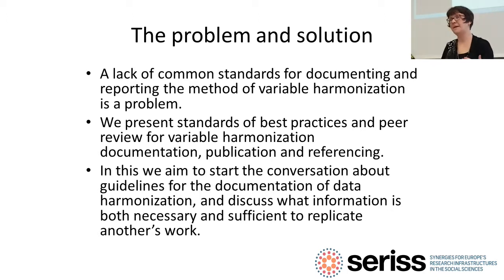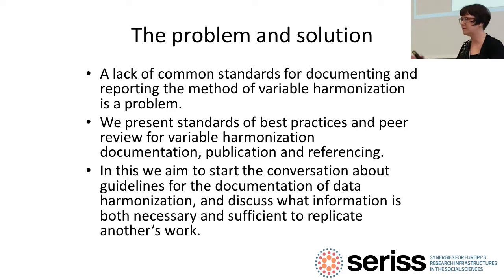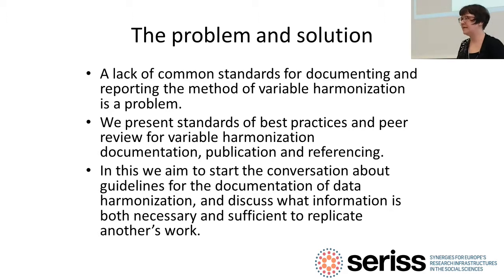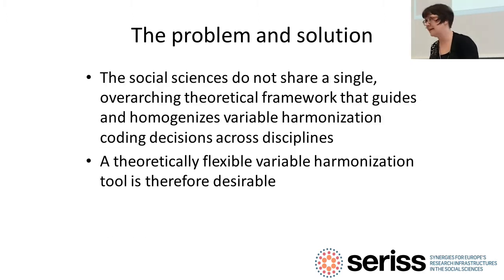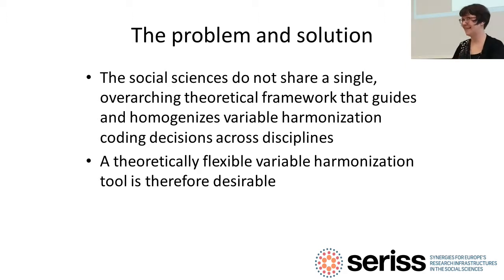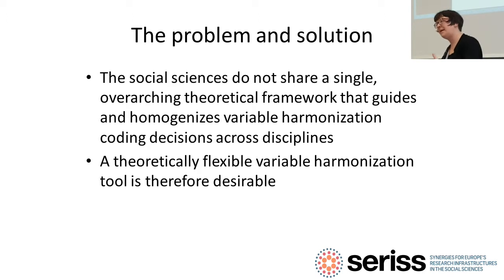We wanted to do a couple of things as we're innovating ways to document variable harmonization. We wanted to set best practices, introduce a concept of peer review for the documentation so people have a similar system to journal articles, and find somewhere to deposit it where people can find it. We were aiming to start a conversation about guidelines and determine what is the necessary and sufficient information — necessary to replicate or cite it, and what is the sufficient information. As social scientists, we don't have a common theoretical framework.